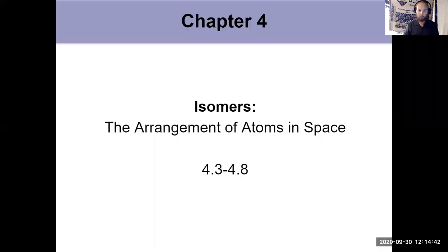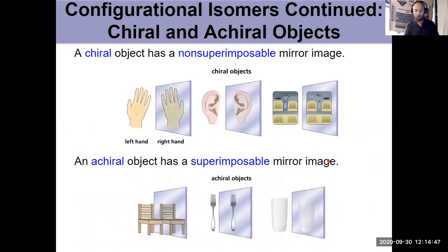In our second video for Chapter 4, we're continuing our discussion of configurational isomers. We've talked about cis-trans and EZ. Now we are talking about configurational isomers where there is an asymmetric center present. And when that is the case, we have what's known as a chiral center, and we may have a chiral molecule.